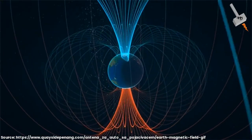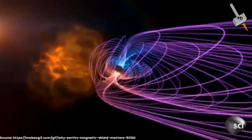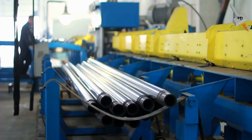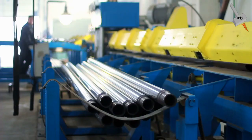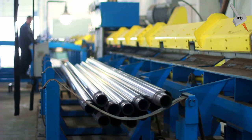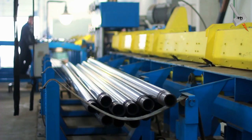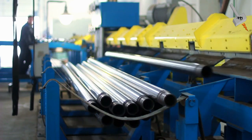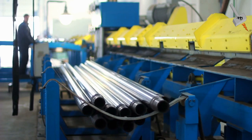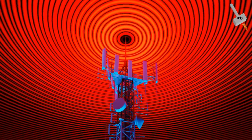Number five is magnetic shielding. Magnetic shielding is used to block or redirect magnetic fields. It involves the use of materials with high magnetic permeability, such as mu metal or certain ferrite materials, to create a barrier that diverts the magnetic field away from sensitive components.